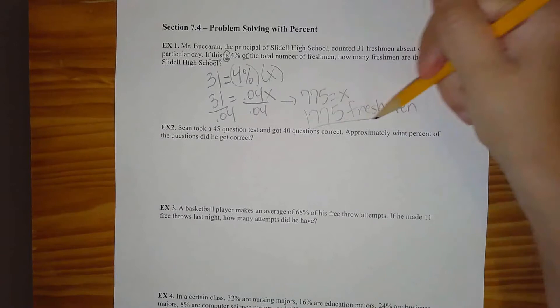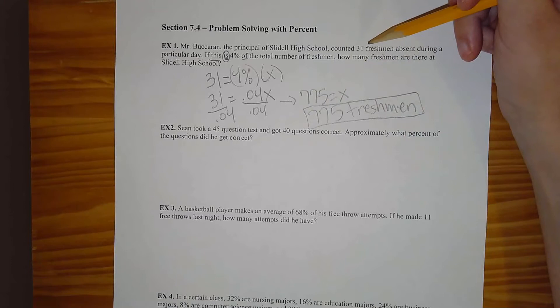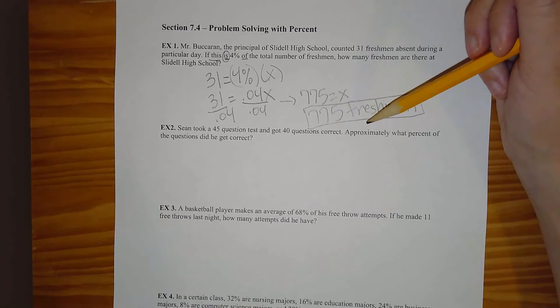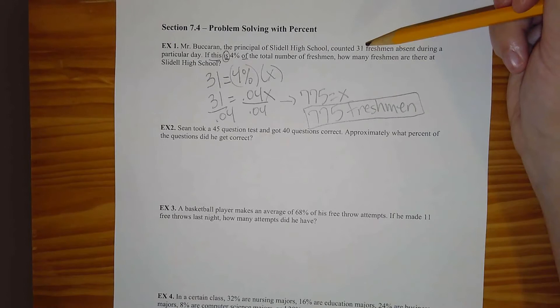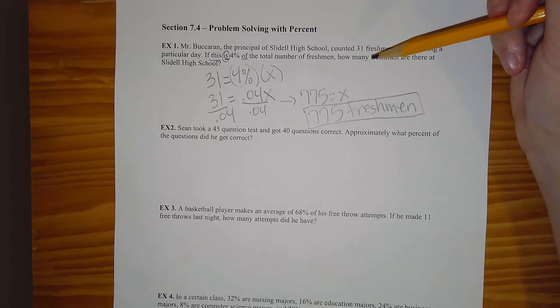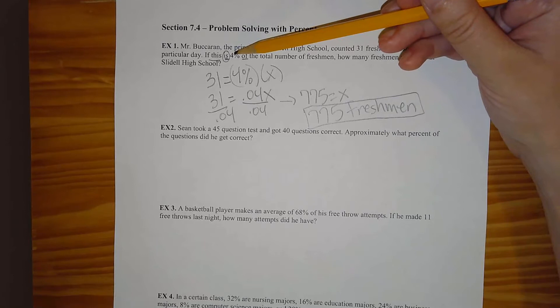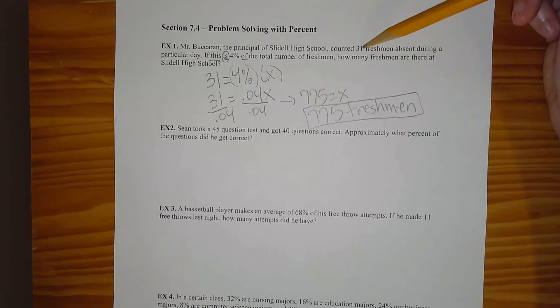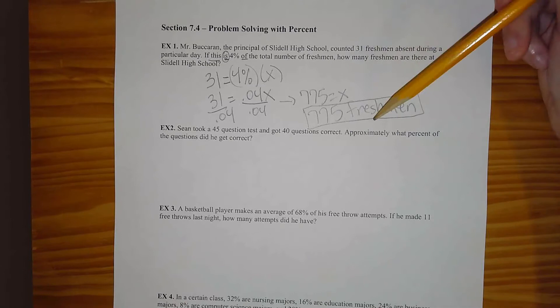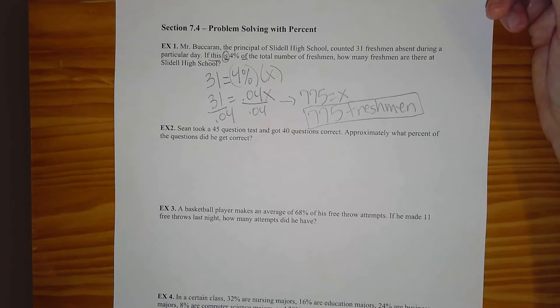The nice thing about word problems is that you can double check that your answer actually makes sense. If you're at a high school and 31 students are absent, it would be strange to get a number less than 31 — you can't have more absent than the total. And since it's only 4%, which is pretty close to zero, 31 should be a very small number compared to the total. So 775 makes sense.